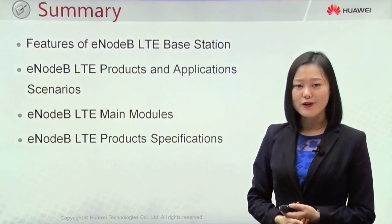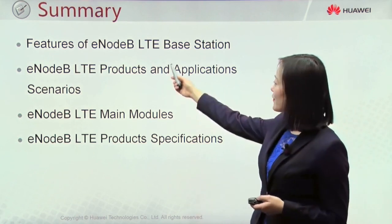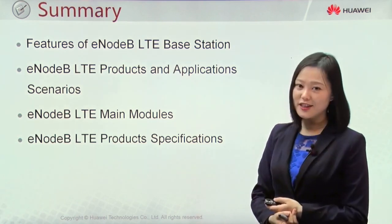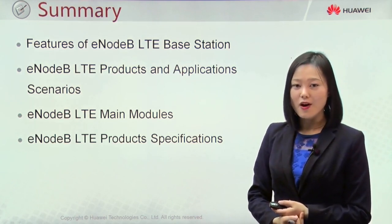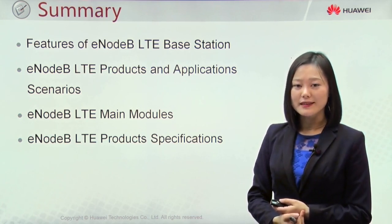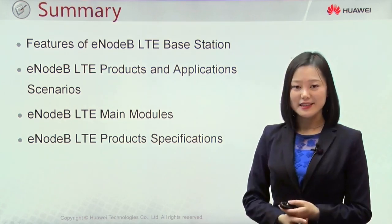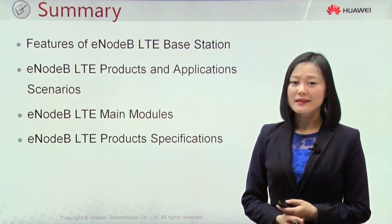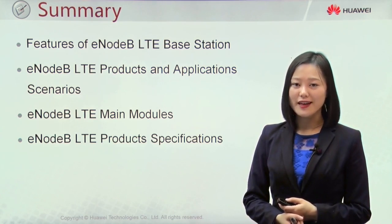That's all for this chapter's content. We introduced the features of E0B products, various product types and application scenarios, the two main modules — BBU and RF unit — and the specifications for FDD and TDD modes. In the next chapter, we will continue to introduce the hardware structure of E0B. Thanks for your time.